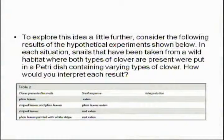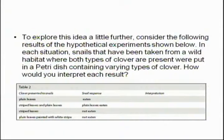Let's explore this last idea a little bit better. Remember, it's a hypothesis — that's what we think. Maybe the white stripe is a warning. To explore this idea a little bit further, consider the following results of the hypothetical experiment shown below. Remember, we have a hypothesis, we make a prediction, and then we test that prediction. The prediction is: if this really is a warning, then I bet herbivores will eat less of the white stripes and more of the green.